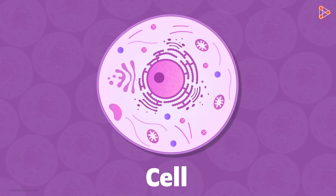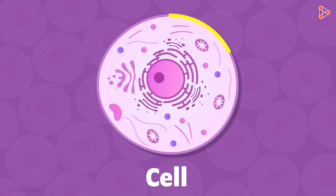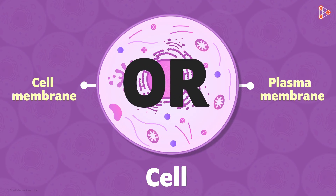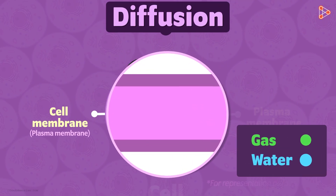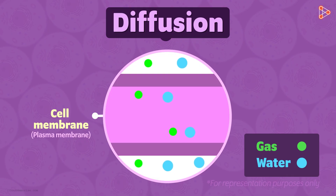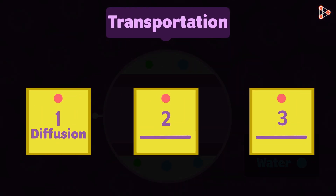Here's a cell on your screen. We have already seen that the various organelles inside it are compactly packed inside this delicate membrane called the cell membrane or the plasma membrane. We've even seen that the cell membrane makes use of the diffusion process to transport gas and water molecules in and out of the cell. However, diffusion is not the only process employed — there are a few more on the list. Let's have a look at these methods in this video.